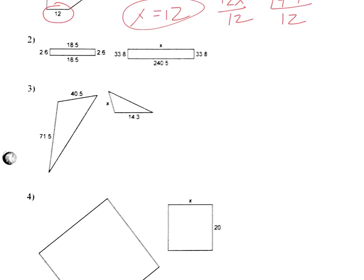So here we have 2.6 goes with 33.8, and then 18.5 with X. Here I did small over big, small over big. Just make sure they always match up that way.